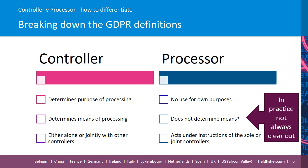Now, this is where there's often confusion, because it's not really that clear-cut in reality. What actually often happens is that a processor will have some degree of determining the means of processing. For example, a software as a service provider may be providing a service to the controller customer and they process the data that's input into their piece of software on behalf of the controller and for the controller's purposes. But they've designed that software and therefore have had some input in terms of the means for processing that personal data. That doesn't necessarily make them a controller, and quite often it's a matter of degree — there's no clear line defined which, if you cross over it, you become a controller.